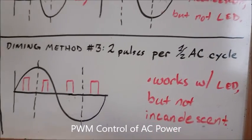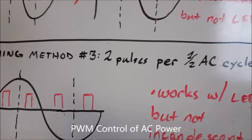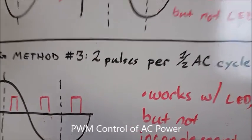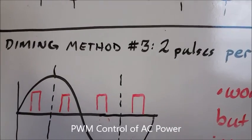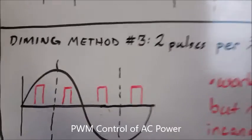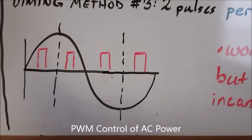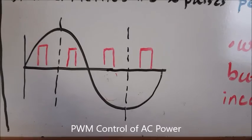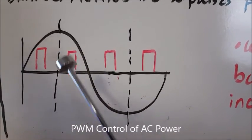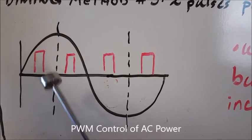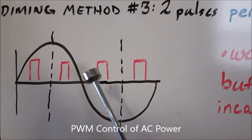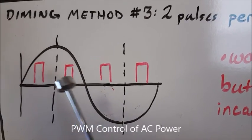Better control on the LED gave me method number three, which is using two pulses per AC cycle. You'll see two pulses on each half cycle, so four pulses total during the AC cycle. The way to increase power is to reduce this gap here, moving those pulses closer together and thus delivering higher voltage pulses, and lower power by moving them apart to the lower portions.